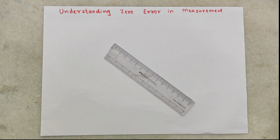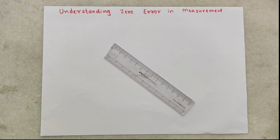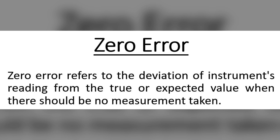Before we start taking any measurement using any instrument, it is necessary to identify whether there is any error in the instrument, and the most common error is zero error. Zero error refers to the deviation of an instrument's reading from the true or expected value when there should be no measurement taken.